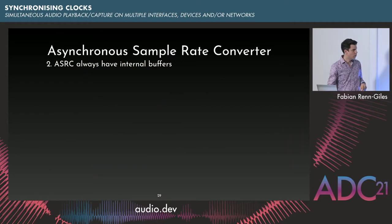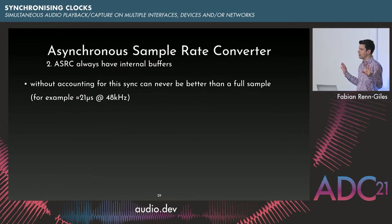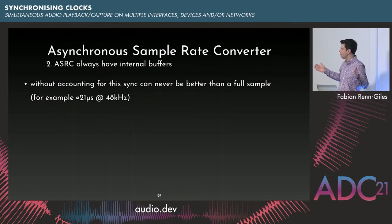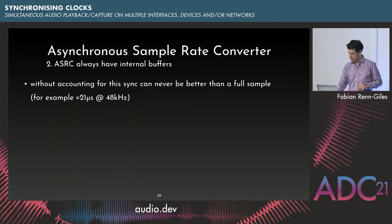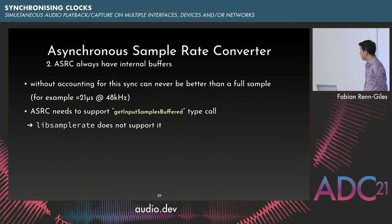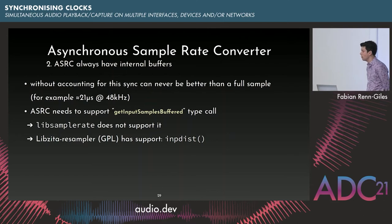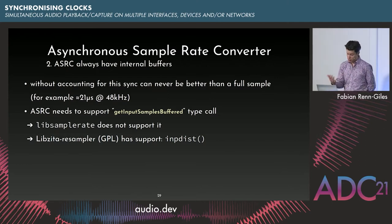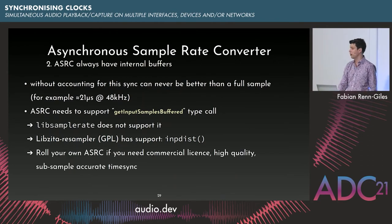If you don't care about subsample time sync, you can ignore the fractional part — it's always between two samples. The 24-sample fixed part is typical of a higher-accuracy ASRC, but the fractional part always changes. If you do care, your ASRC needs a get_input_samples_buffered call. LibSampleRate does not support this, so you cannot use it for high-accuracy audio synchronization. LibZita resampler does support it — it's called input_distance in the API — but it's GPL. At Sing, we needed a commercial license and couldn't find one, so we rolled our own ASRC.